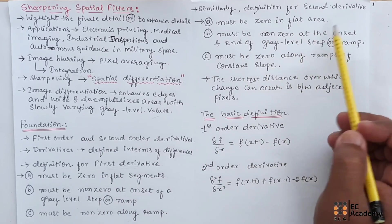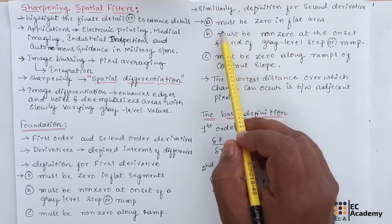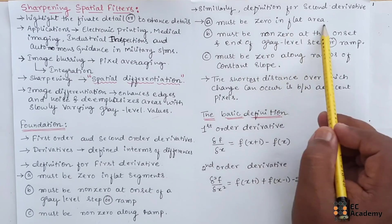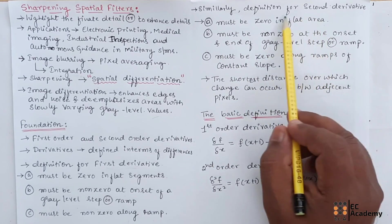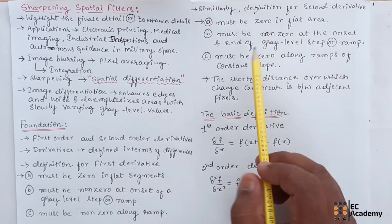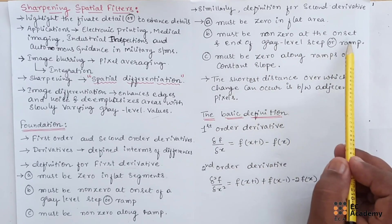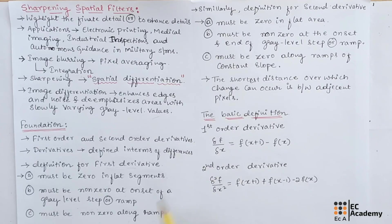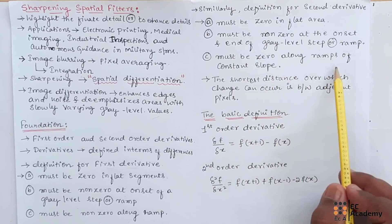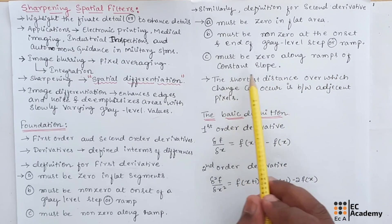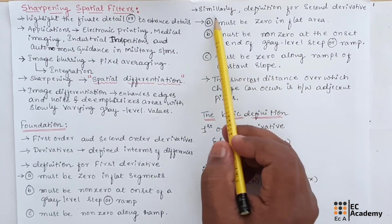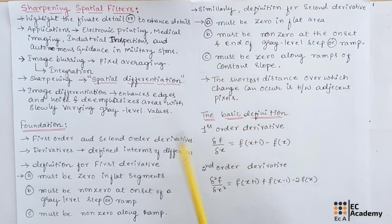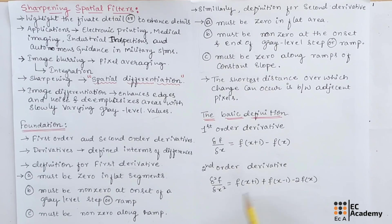Similarly, we can define properties for the second-order derivative. It must be zero in flat areas, must be non-zero at the onset and end of a gray level step or ramp, and must be zero along a ramp of constant slope. We will take an example where you will understand what a ramp and flat segment are.